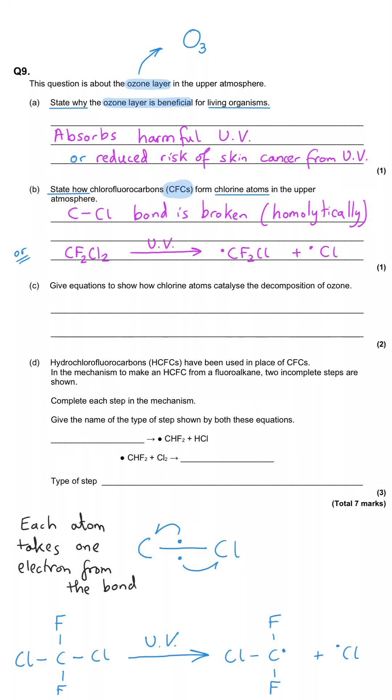And then in part C, they ask us to give equations to show how chlorine atoms can catalyse the decomposition of ozone. Ozone, which is O3, can decompose and turn into O2.